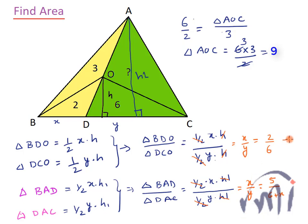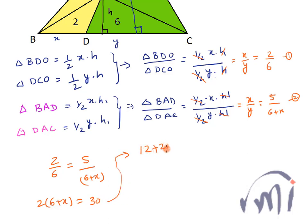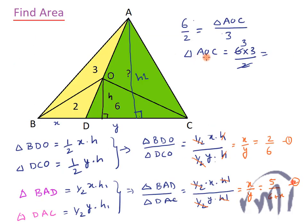So from these two equations, 2/6 = 5/(6 + X). Cross multiplying gives 2 × (6 + X) = 5 × 6 = 30. So 12 + 2X = 30, meaning 2X = 18, and therefore X = 9. That is the area of triangle AOC — 3 threes are 9.